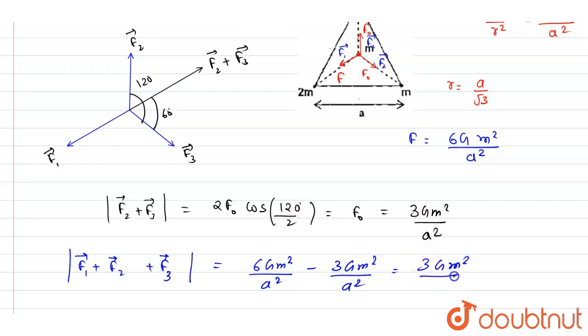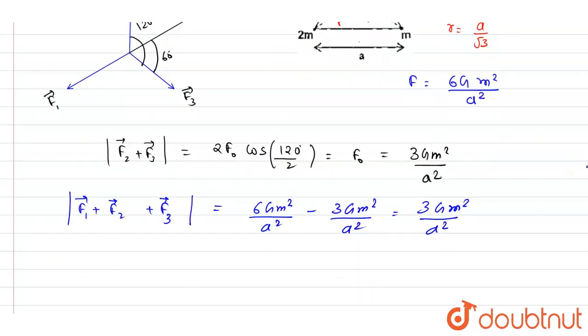So it will be minus this, so it will be 3Gm²/a². Since the two are antiparallel, if you see, if I say this is r vector, so r vector and this f1 vector are antiparallel, so we can directly subtract them, right?